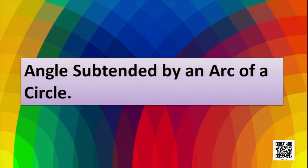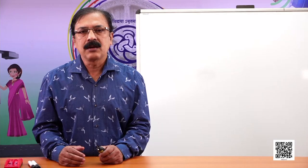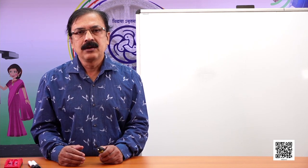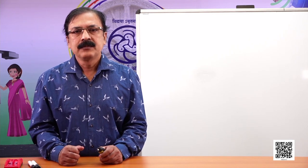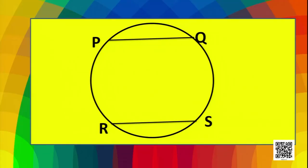Before going to discuss about the angle subtended by an arc, let's understand what it means. If you take two equal chords, what can you say about the arcs? Here we have two chords PQ and RS. These are two equal chords. If we cut the circle from RS and superimpose it on the minor arc PQ, then we can see that both will match.